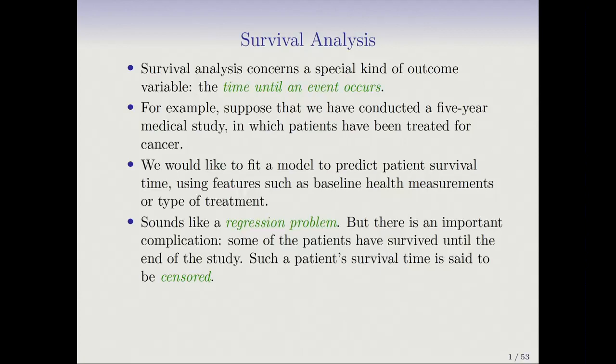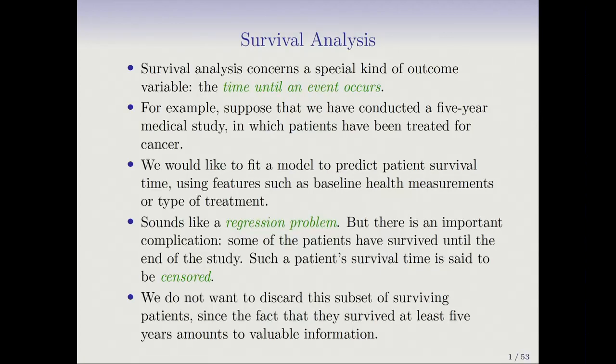But there's an important complication: some patients have survived until the end of the study. Such a patient's survival time is said to be censored. That causes problems because sometimes as many as 70 or 80 percent of patients are censored. We don't want to throw away that data — it's a lot of information, because the fact they survived at least five years tells us something about the patient and their features. So we want to make good use of that partial information.